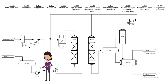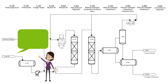The flow rate coming into the system can be controlled with a flow control valve. This system is designed for 10,000 barrels per day. The feed operates at a temperature of 60 degrees Celsius or 140 degrees Fahrenheit, and a pressure of 450 kPaG or 65 psig.